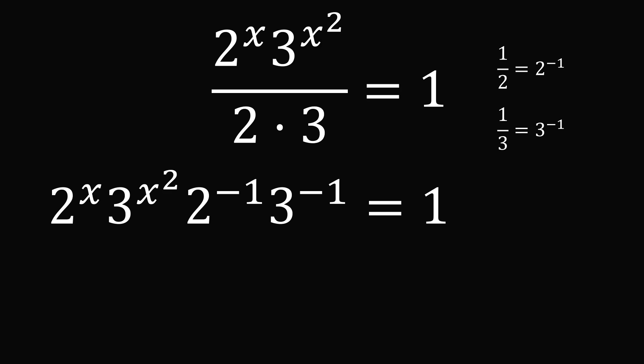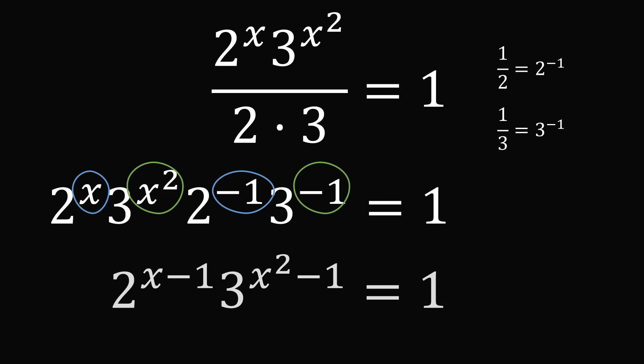We can now add the exponents where we have the same base. We have 2 to the power of x with 2 to the power of negative 1, so we add x and negative 1. We also have 3 to the power of x squared and 3 to the power of negative 1, so we add x squared and minus 1. The equation becomes 2 to the power of x minus 1 times 3 to the power of x squared minus 1 equals 1.